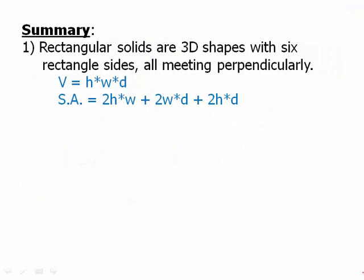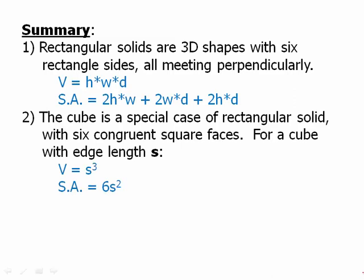Rectangular solids are 3D shapes with six rectangle sides, all meeting perpendicularly. The volume is given by the product of the three different edge lengths h times w times d. The surface area is the sum of 2hw plus 2wd plus 2hd. In other words, we're just summing over the rectangles on the individual faces. The cube is a special case of rectangular solid, with six congruent square faces. For a cube with edge length s: the volume is s cubed, the surface area is 6s squared.